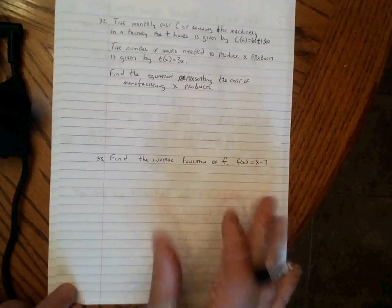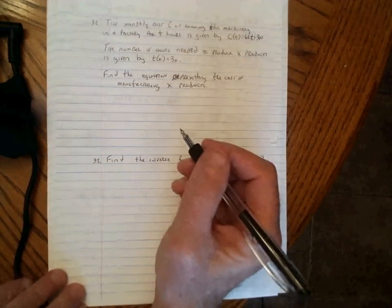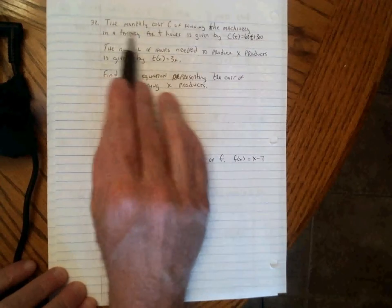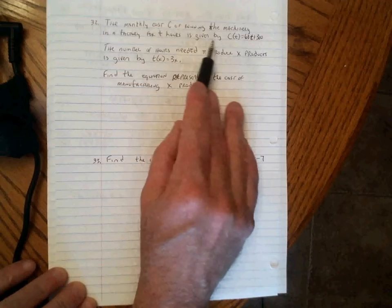We'll work on problems number 32 and 33 now on UALR final exam review. Problem 32 says the monthly cost C of running the machinery in a factory for T hours is given by C of T equals 60T plus 300.